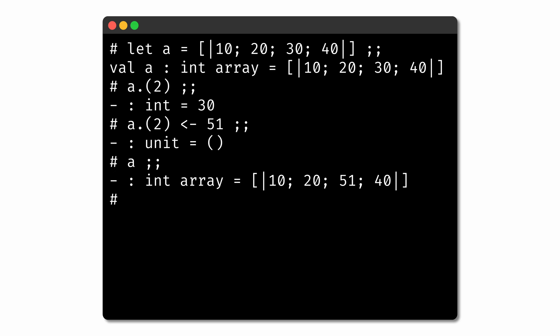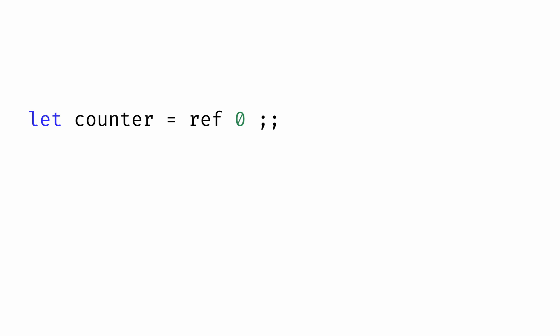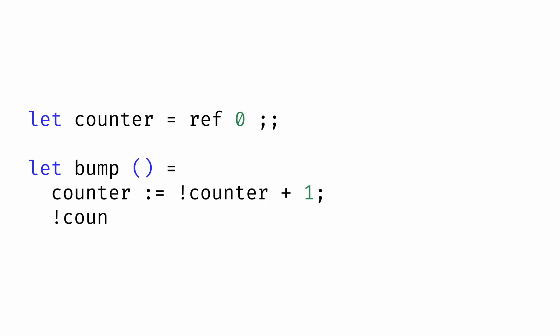Now that we have all these different ways to represent mutable data, what can we actually do with it? One simple example would be to use mutable data to keep a running count of something. To maintain a counter that gets updated, we might start by defining a variable counter that's a reference to the integer zero. Now we could define a function bump that increments and returns the counter. We use the update operator to update the value of the counter — we dereference the existing counter to get the integer value, then increment that number by one. That then becomes the new counter.